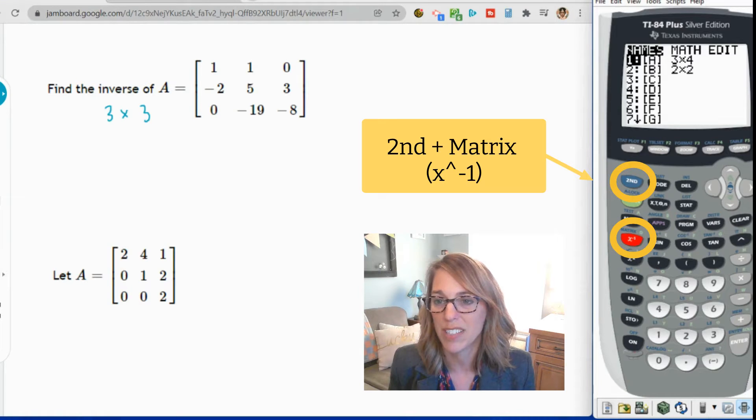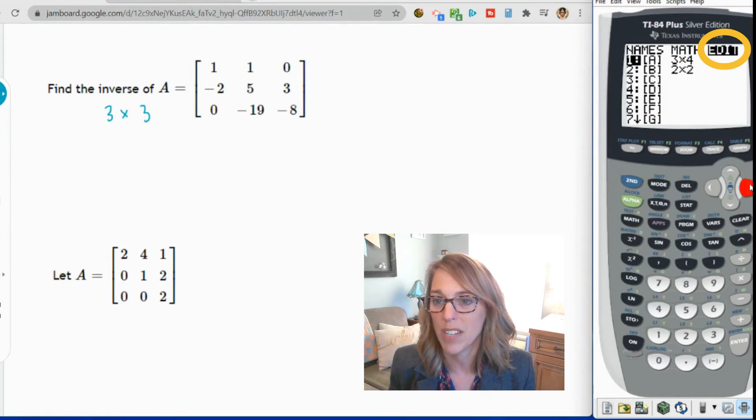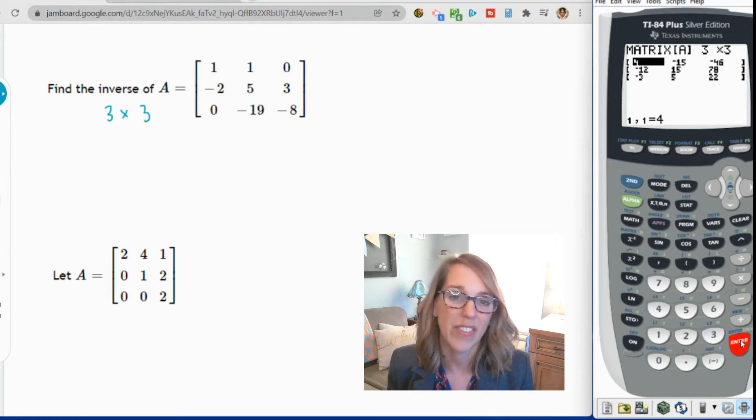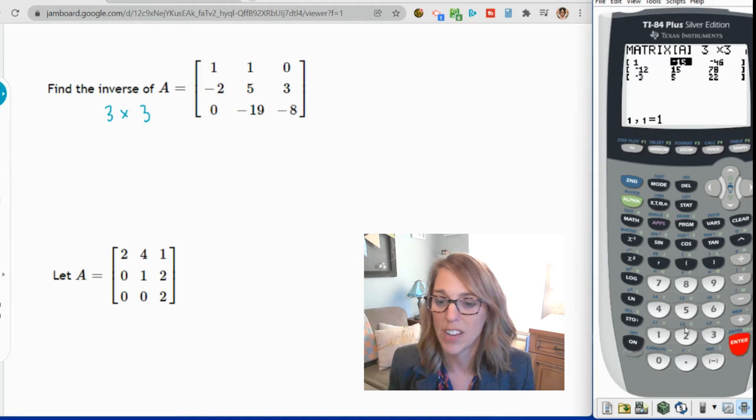I'm going to go second and then matrix. I want to do an edit because I'm inputting the entries and I'm going to go ahead and edit matrix A. I can change the dimensions of this. I want to change it to a three by three. So I'm going to go three, enter, three, enter, and then the calculator gives me the correct size. Let's go ahead and put the entries in.